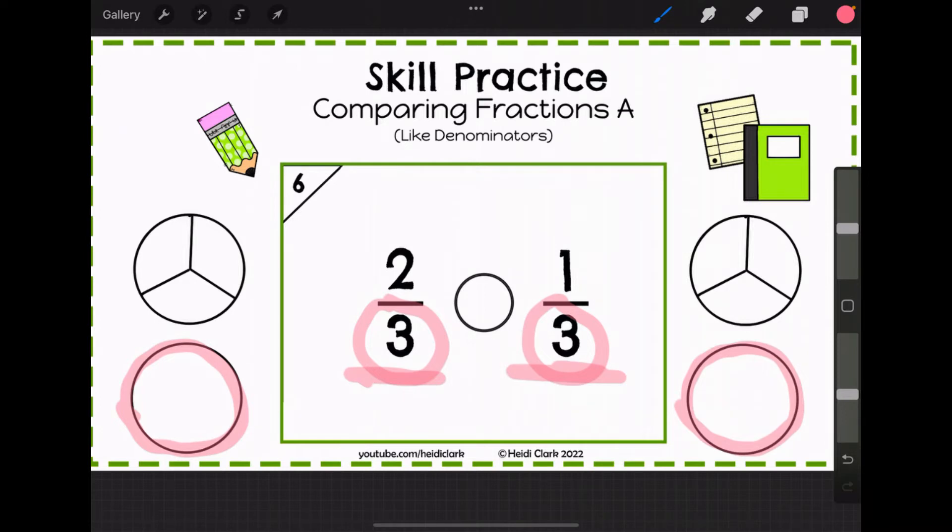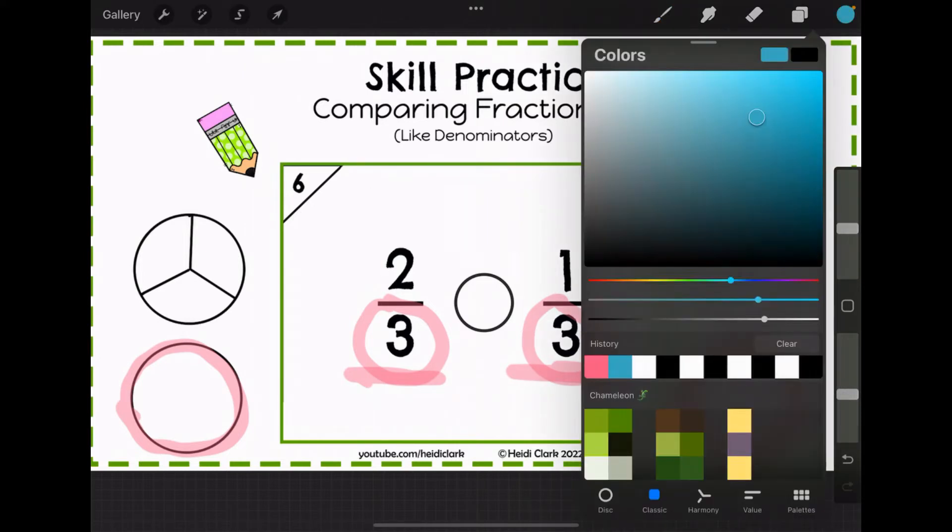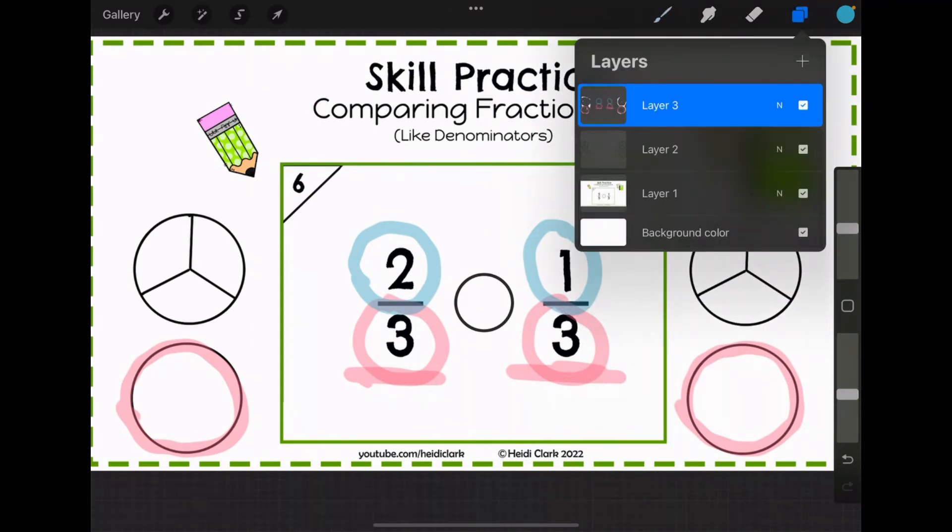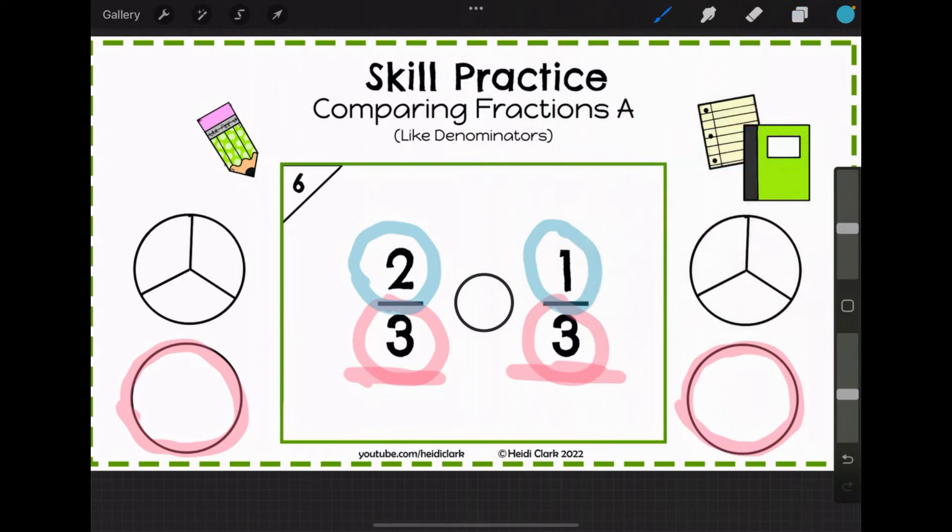Now let's look at the numerator, because the numerator is actually different. This one's a two, and that one's a one. So what does the numerator refer to? The numerator is how many pieces you get.